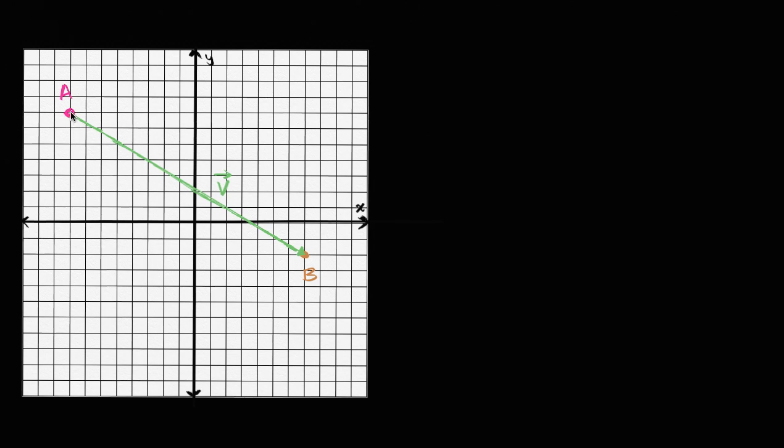So what are the coordinates of A? The x-coordinate is negative one, two, three, four, five, six, seven, eight. So A is equal to negative eight, and the y-coordinate is one, two, three, four, five, six, seven. So it's negative eight, comma, seven.